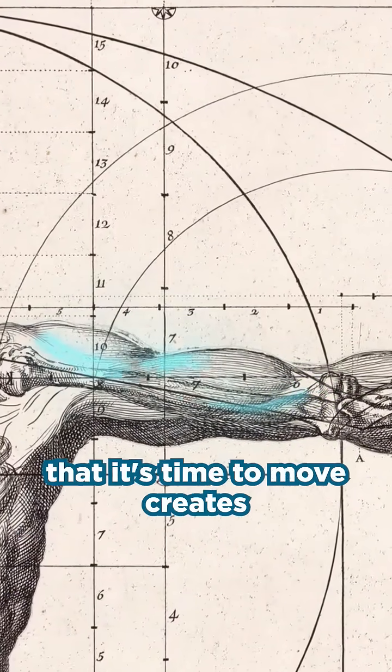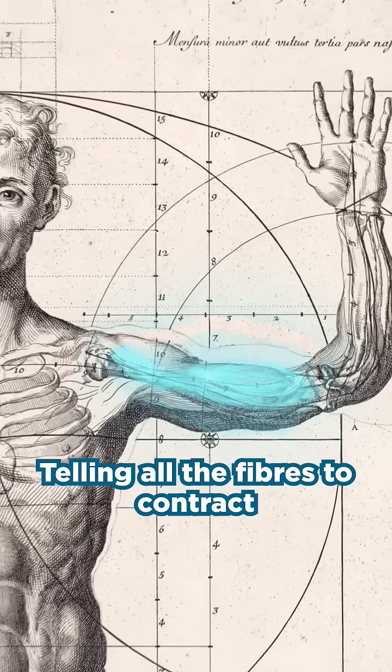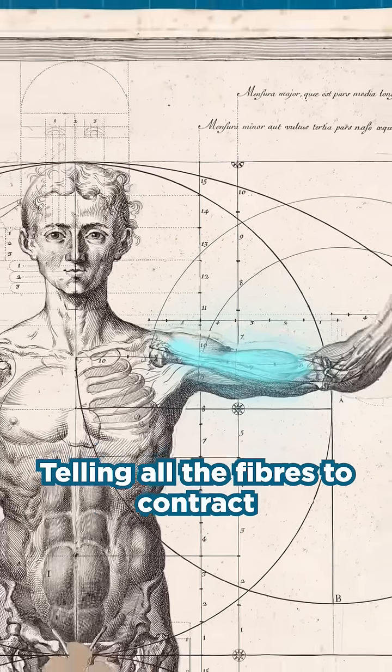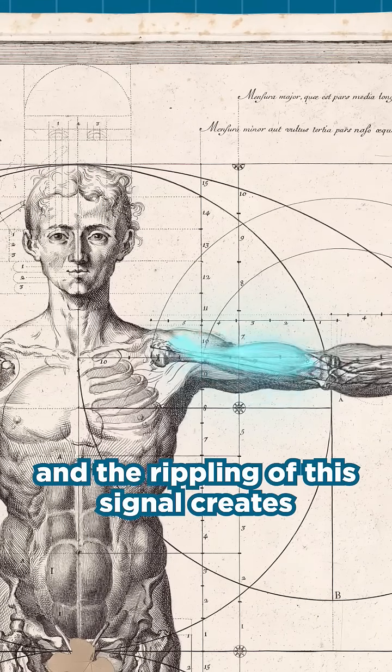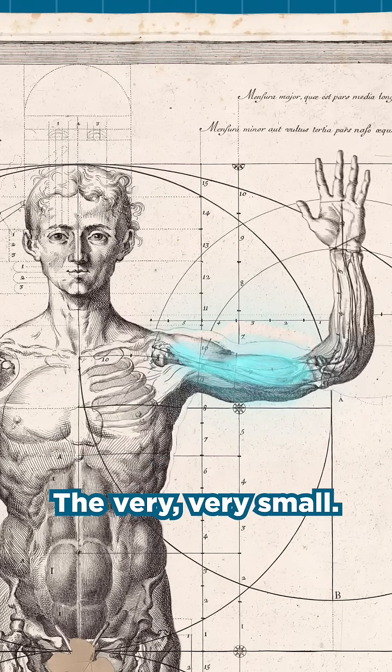Your muscle, now knowing that it's time to move, creates another signal that ripples along the muscle itself, telling all the fibers to contract. And the rippling of this signal creates a tiny voltage difference in the thousandth of a volt. They're very, very small.